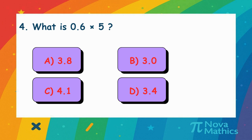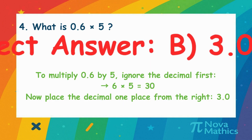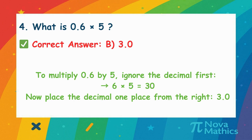4. What is 0.6 times 5? Let's multiply 0.6 by 5. First, think of it without the decimal. 6 times 5 is 30. Now put the decimal back one place. That's 3.0.